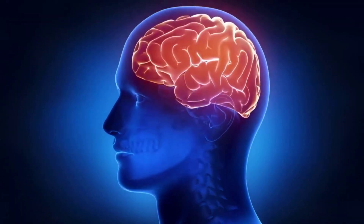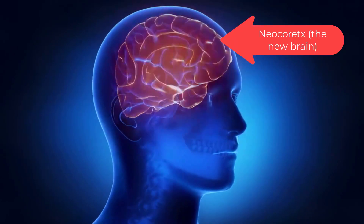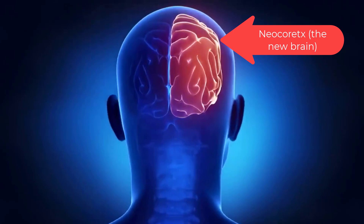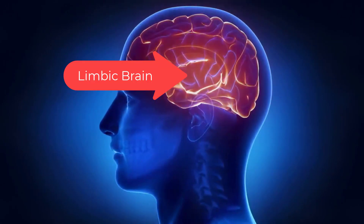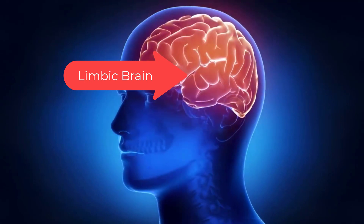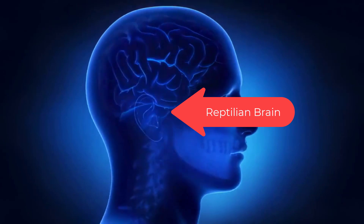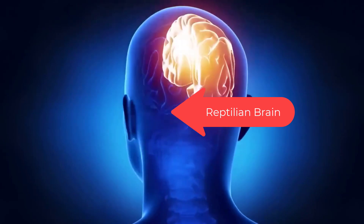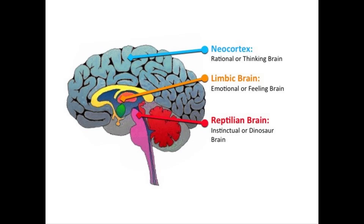Your brain has three basic layers and only one real decision maker. The new brain, the neocortex, thinks and processes rational data. The middle brain, the limbic brain, feels emotions and is our instinct — fight or flight response. The old brain, the reptilian brain, decides. It can take input from the other brains but can also decide faster than the blink of an eye, then use the other brains to justify the decision. The reptilian brain is visual and hardwired into the brain stem.